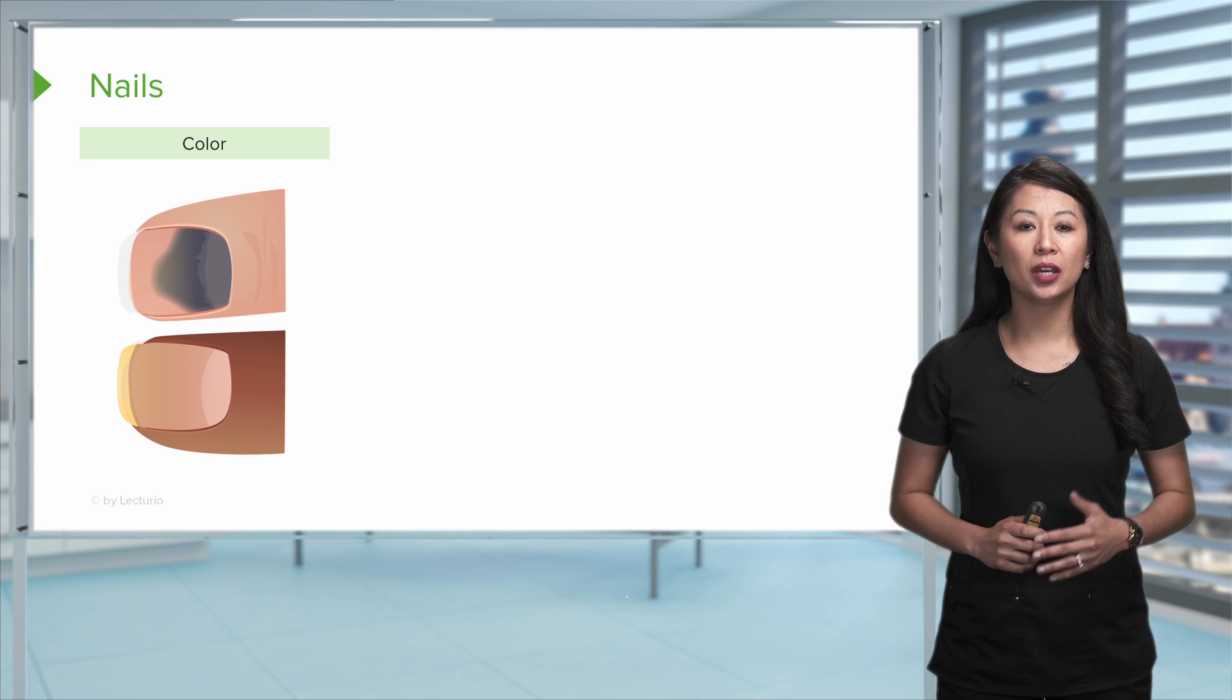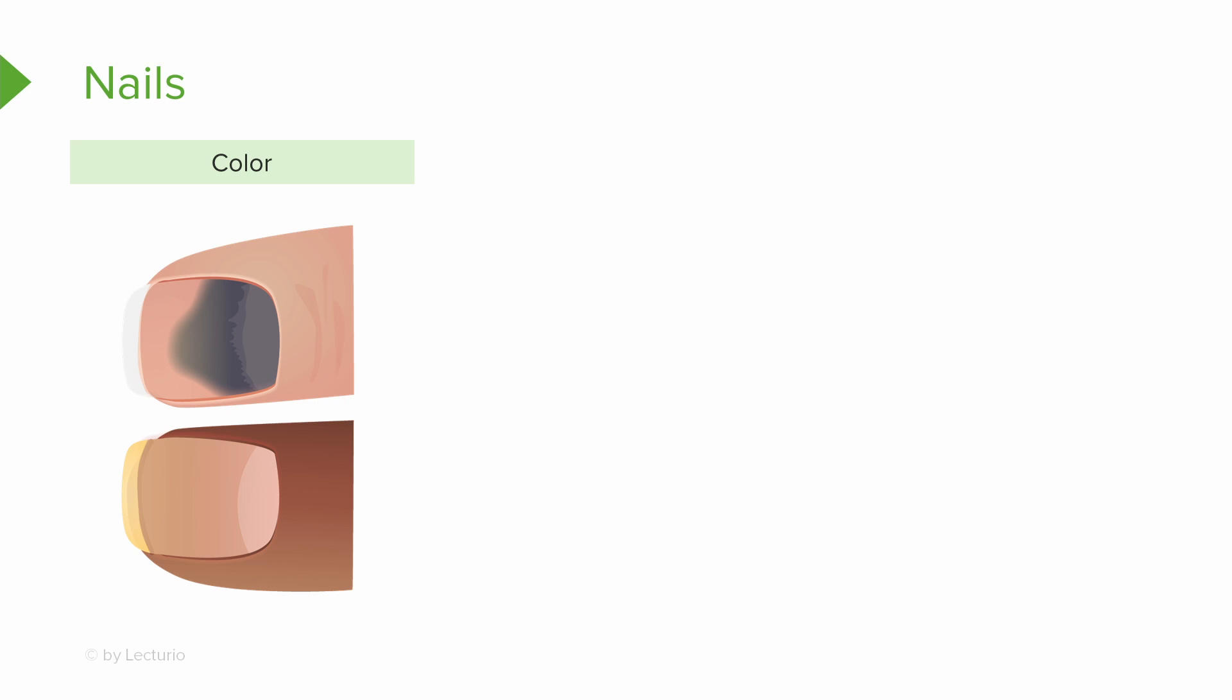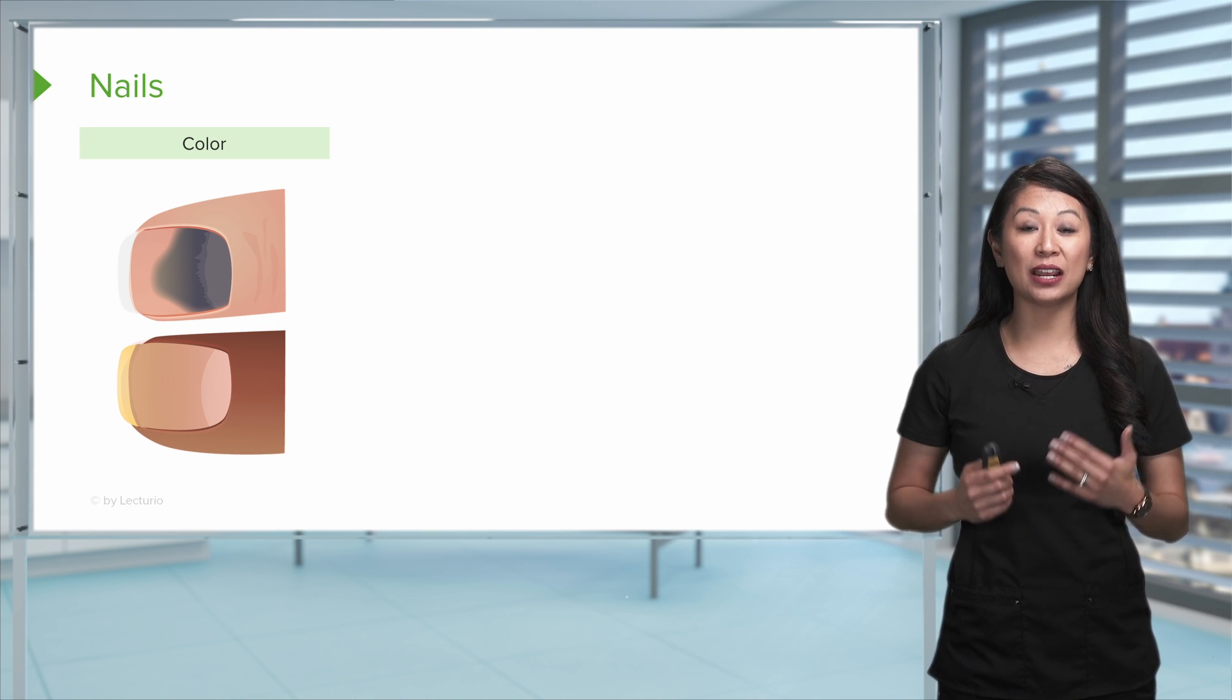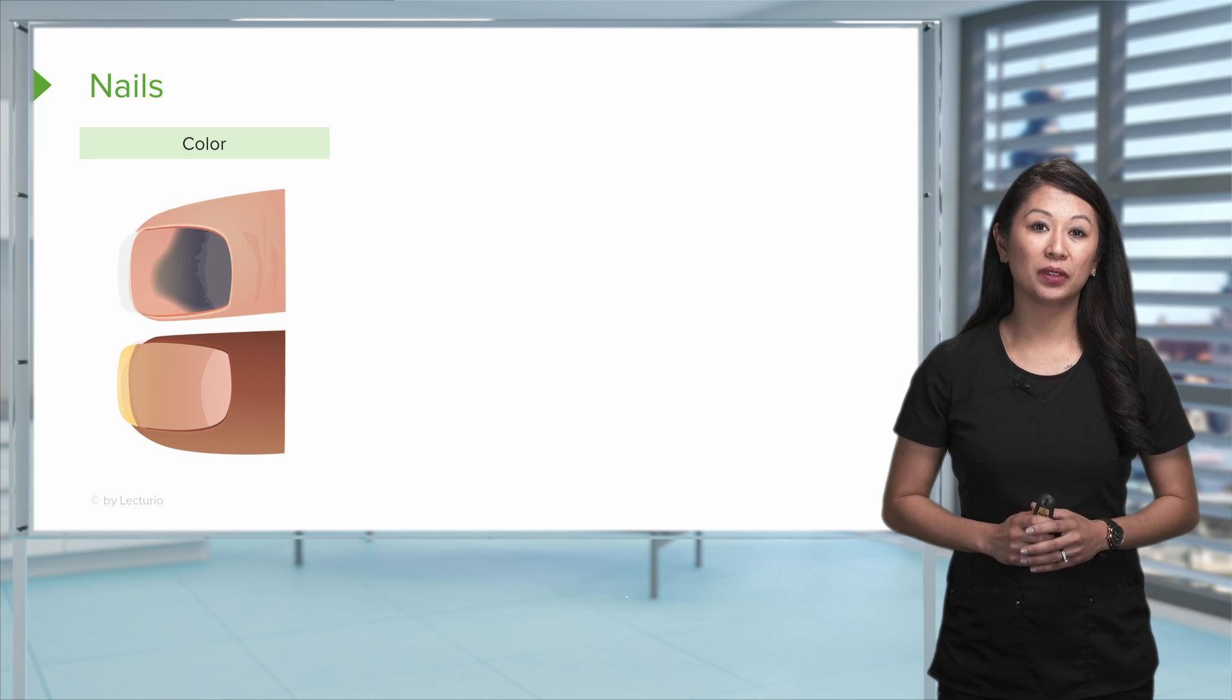If you take a look at this image, you see this purplish color in the nail. That usually could mean like trauma, for example. I know one of my nails turned purple when I accidentally shut my nail in the car door.